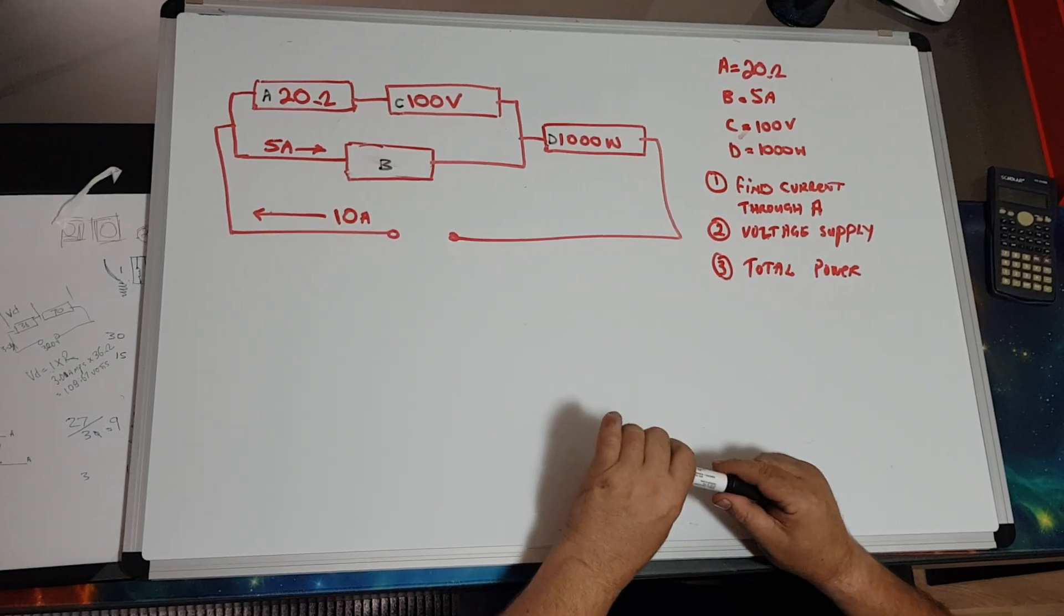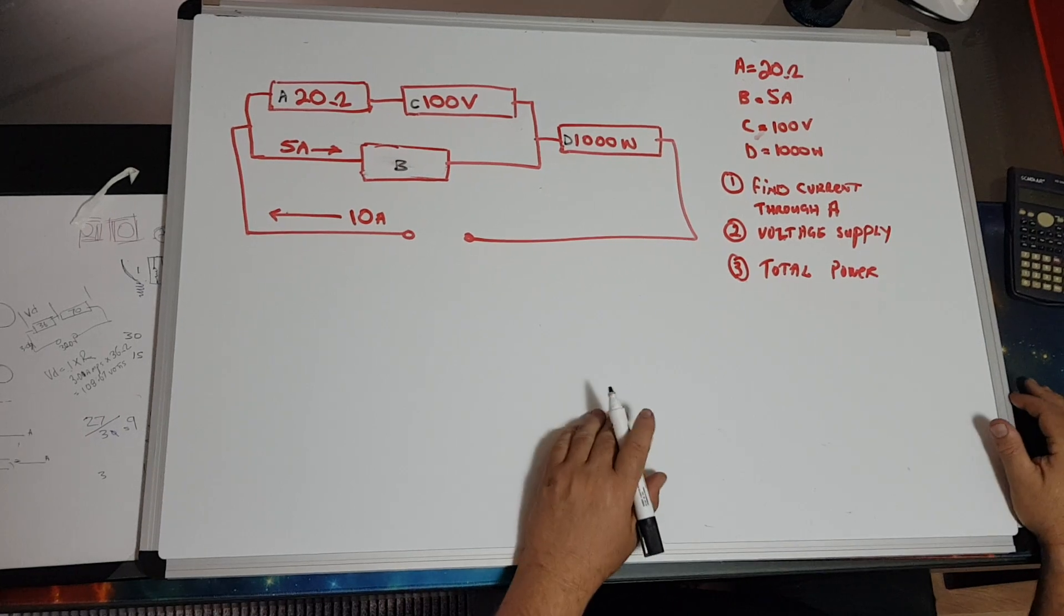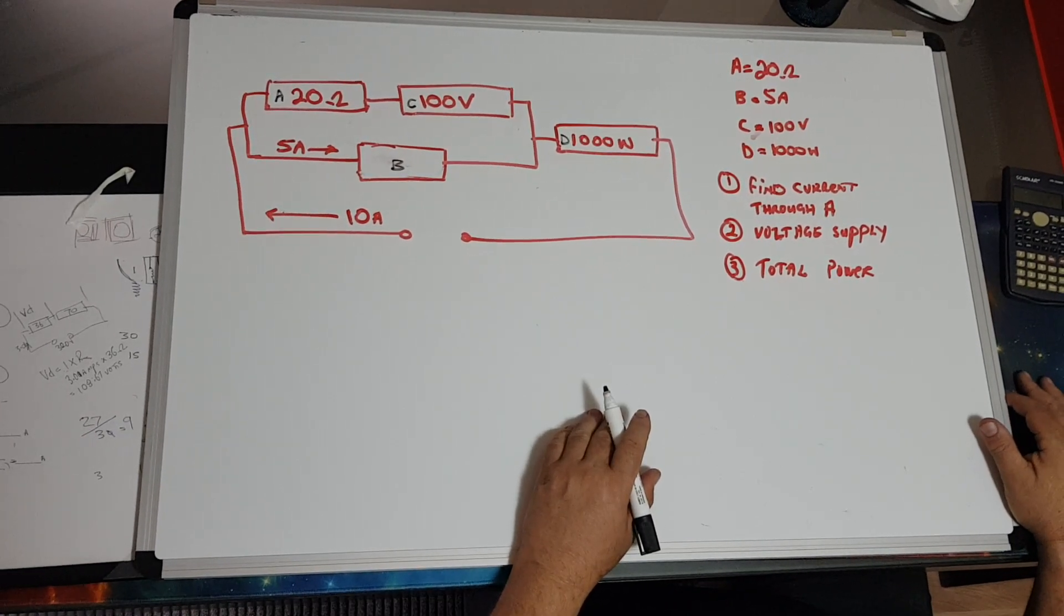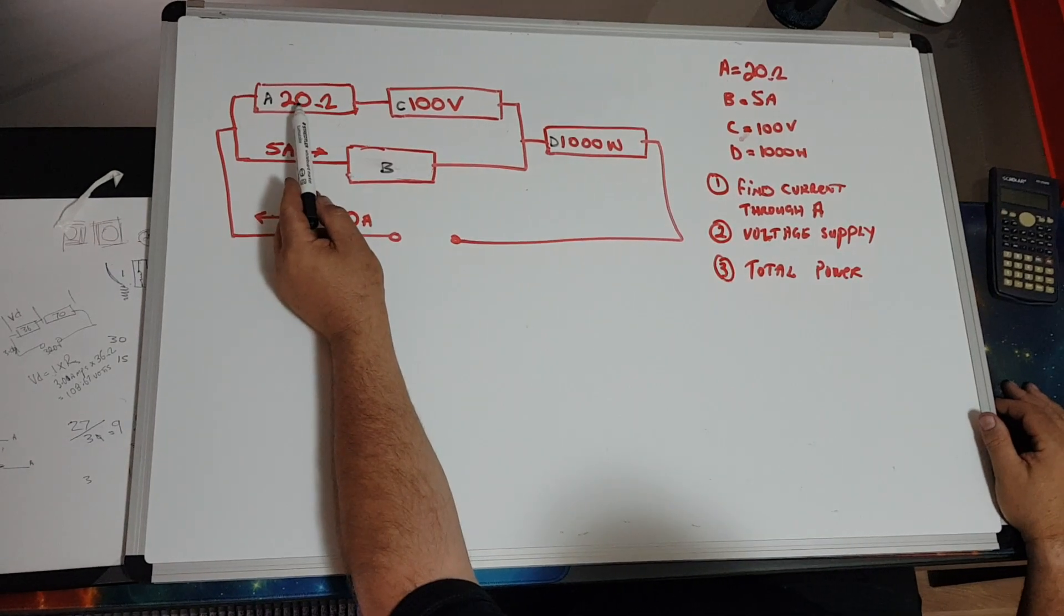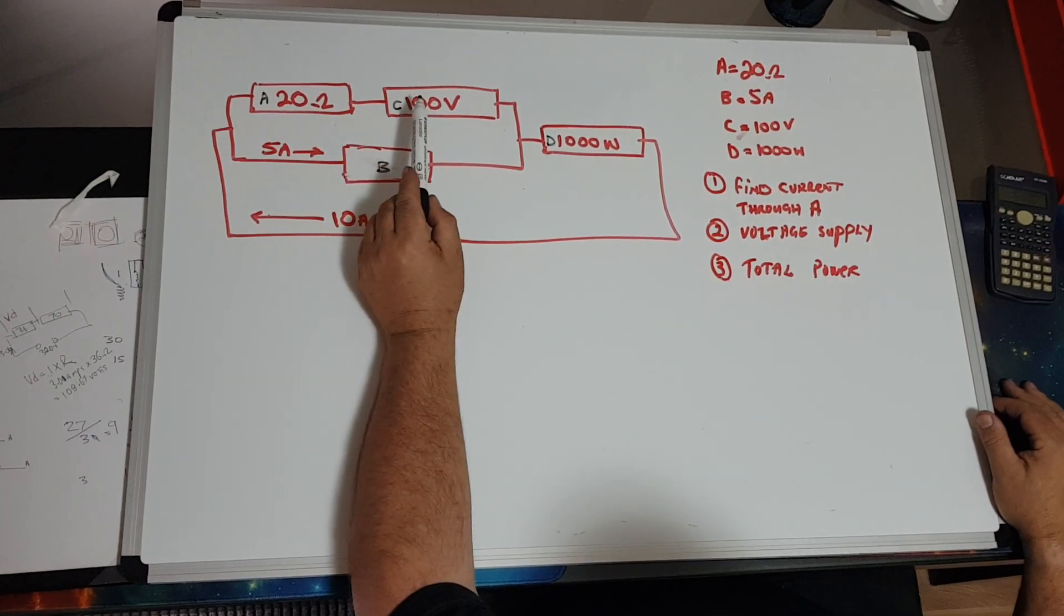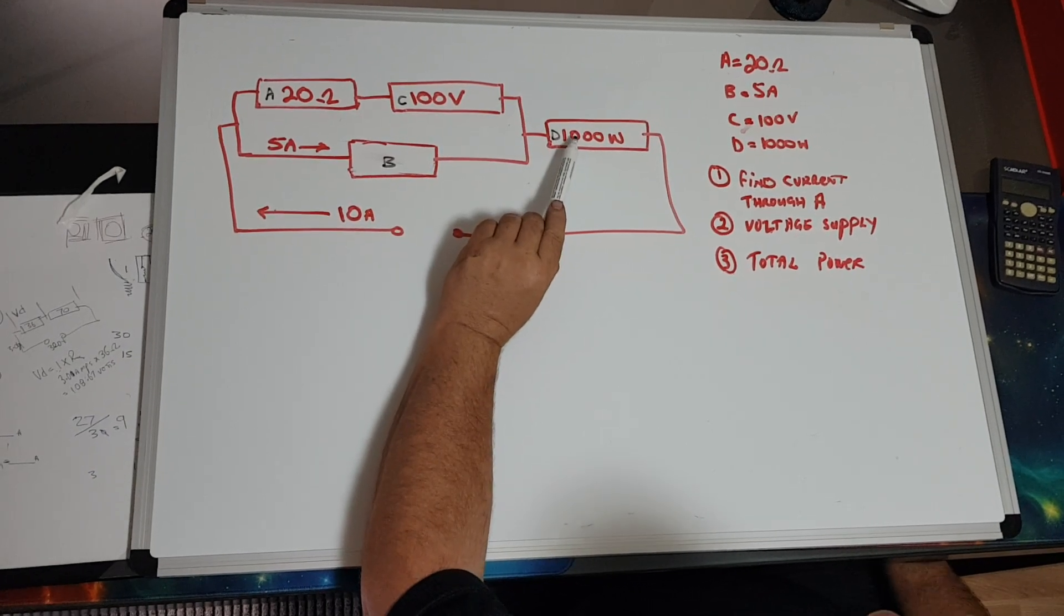Okay, in this video we're going to look at a different type of DC circuit in the LET exam. Here we've supplied with a resistor of 20 ohms, 100 volts, and a thousand watts.